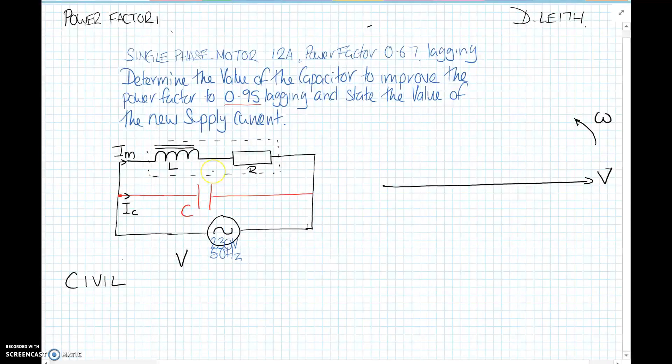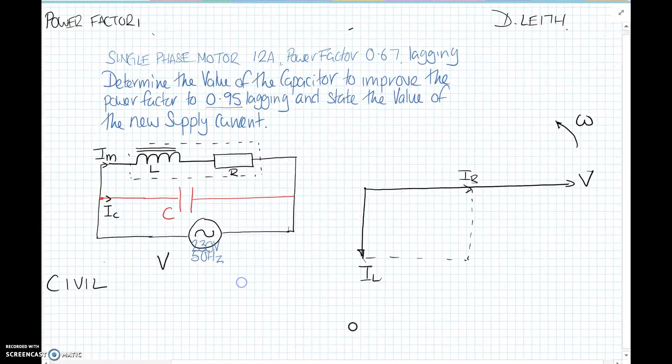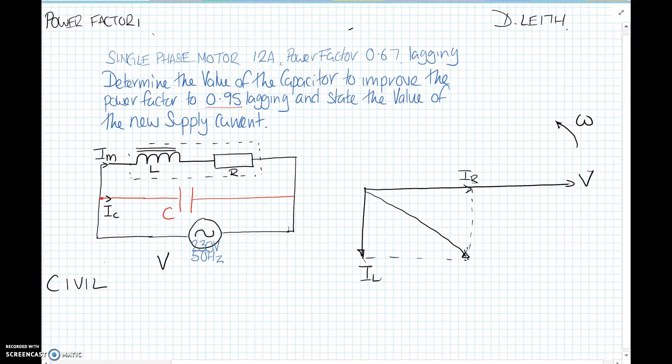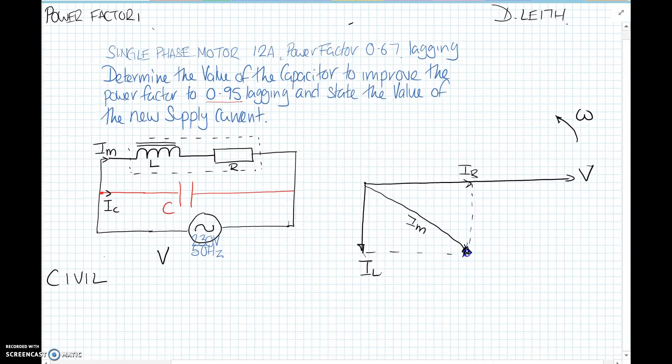And what we're going to have is current going through the inductor, IL, and current going through the resistor, IR. I don't know what these values are, so we're just showing you the phasor directions. The resultant of them two, together with the phasor sum of IR and IL, gives us basically IM. So that's the total current, I motor. It's the phasor sum.